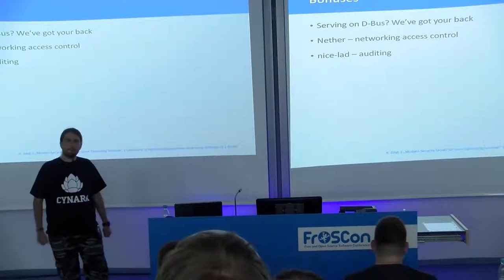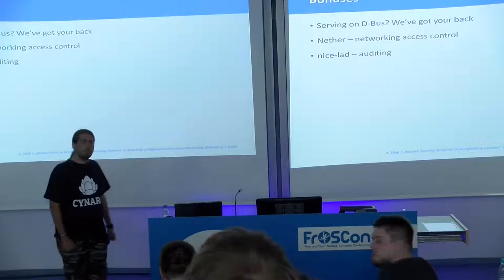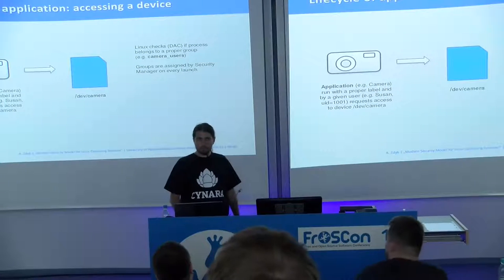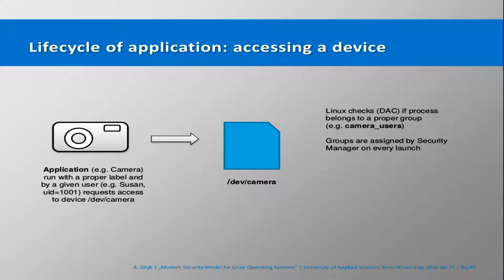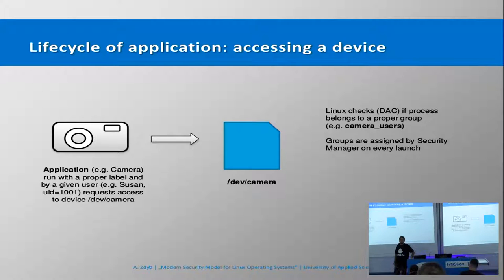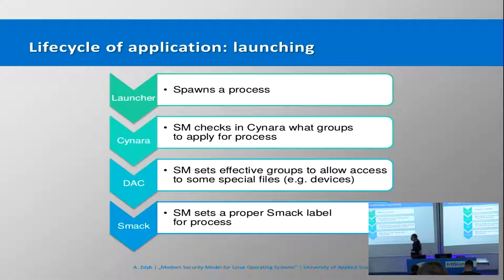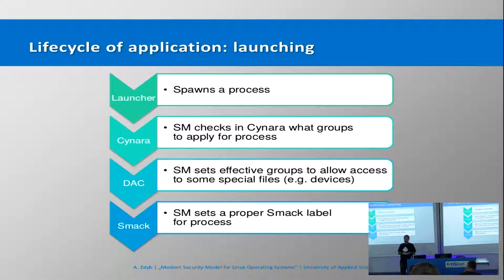Q: In your camera example, you activate a group for camera access. What if you need camera and GPS — can a process be in two groups? A: Yes. When the process is launched it can run with an arbitrary number of groups. You can apply camera_users, GPS_users, and so on simultaneously. Just as a user can be in multiple groups at the same time, so can the process — it can be in several groups at the same moment.